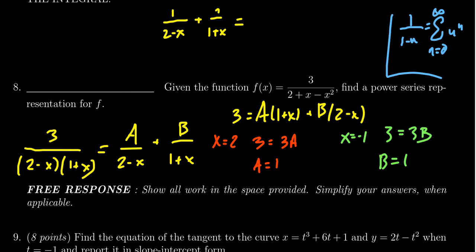And so for the first one, we're going to factor out the 2. So we already have an equal sign there. So we get 1 half times 1 over 1 minus x over 2. And then for the next one, we just write it as a double negative. So we get 1 over 1 minus a negative x, like so.